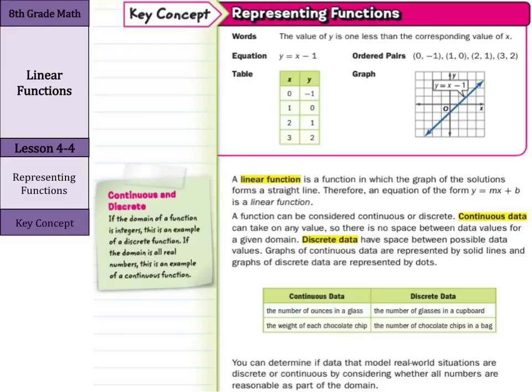Now here's something that may be new. A function can be considered continuous or discrete. Continuous data can take on any value, so there is no space between data values for a given domain. Discrete data have space between possible data values. Graphs of continuous data are represented by solid lines.